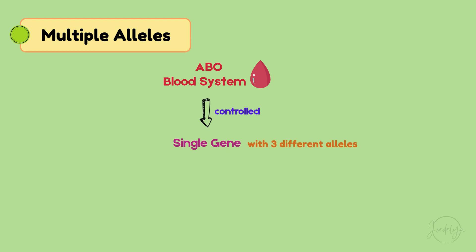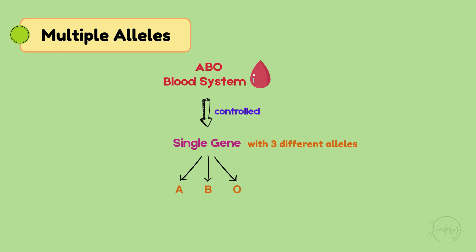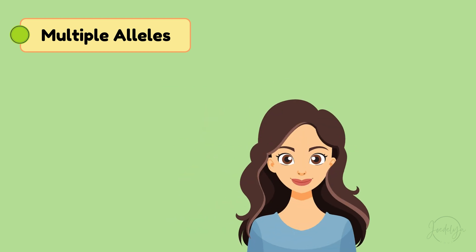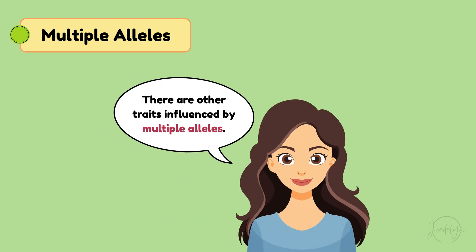The three alleles are allele A, allele B, and allele O — also called i, the recessive form. These multiple alleles combine in different ways to produce all four blood types. In addition, there are other traits influenced by multiple alleles.